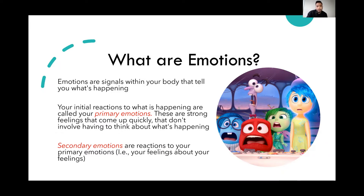There's a distinction between primary emotions and secondary emotions. Your initial reactions to what is happening are called your primary emotions — those strong feelings that come up quickly without having to think. Secondary emotions are reactions to your primary emotions; they're your feelings about your feelings. Sometimes one emotion could be masking a true emotion underneath. For example, I might display anger as a secondary emotion, but underneath it might be guilt, shame, or sadness. Figuring out this distinction is the first key to understanding and regulating our emotions.